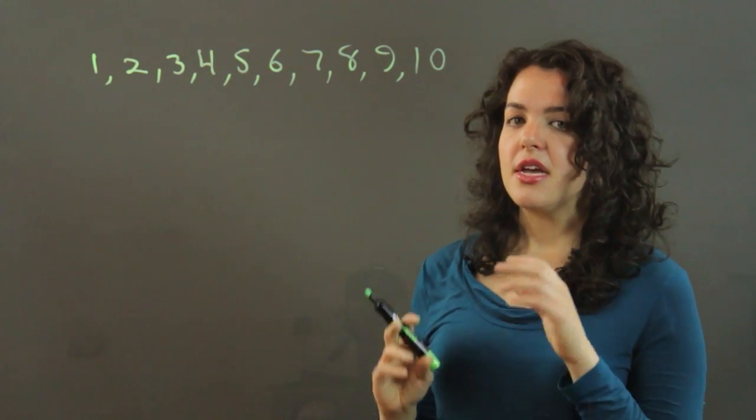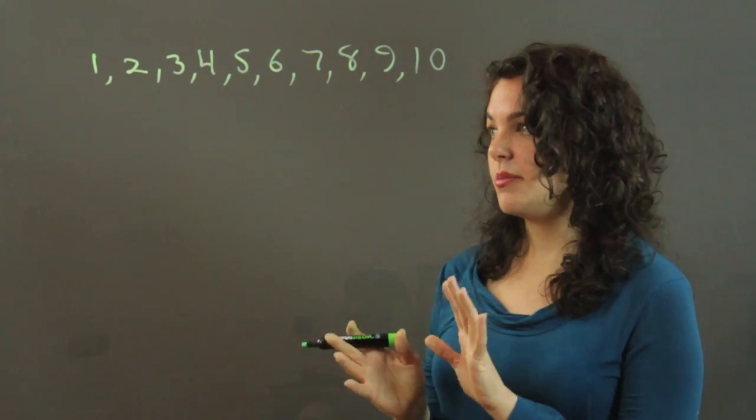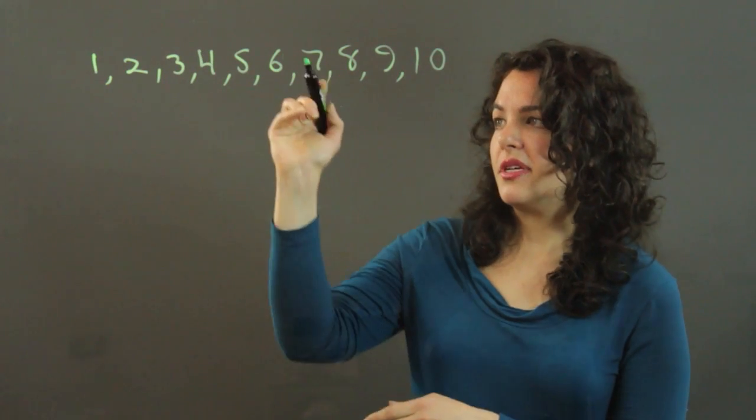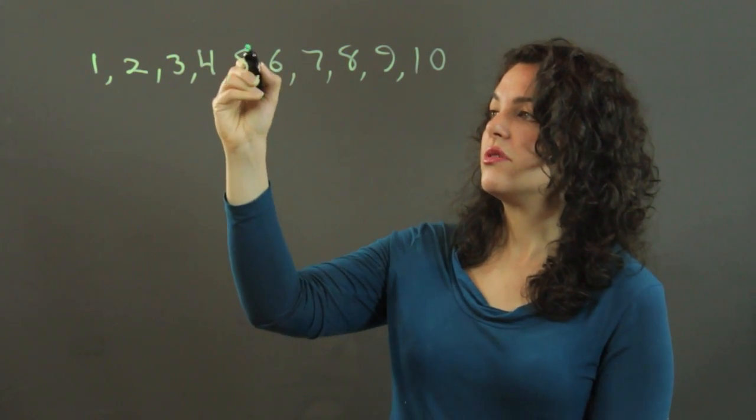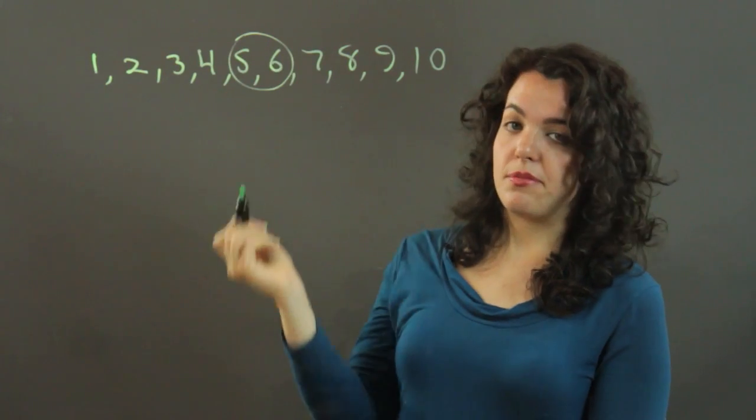Now, because we have an even set of numbers, we don't have a number that falls directly in the middle. So what we have to do is average the middle two.